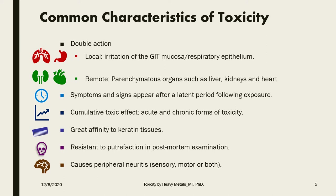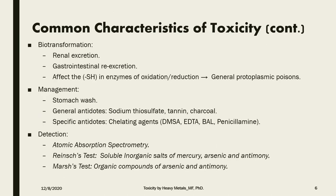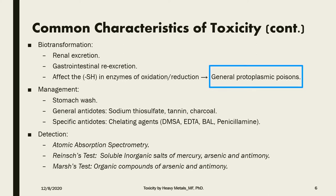Heavy metals cause peripheral neuritis, which depends on the type of element — sometimes it is sensory neuritis, motor, or both. There is a high chance of biotransformation in the form of renal excretion or gastrointestinal re-excretion. They affect the sulfhydryl groups in the enzymes responsible for oxidation and reduction in the tissues, and therefore they are known as general protoplasmic poisons.